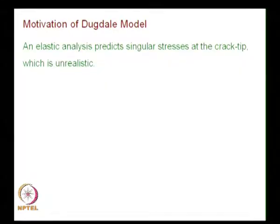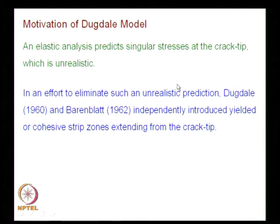In the last class, we looked at the motivation of the Dugdale model. An elastic analysis predicts singular stresses at the crack tip, which is unrealistic. In an effort to eliminate such an unrealistic prediction, Dugdale in 1960 and Barenblatt in 1962 independently introduced yielded or cohesive strip zones extending from the crack tip.